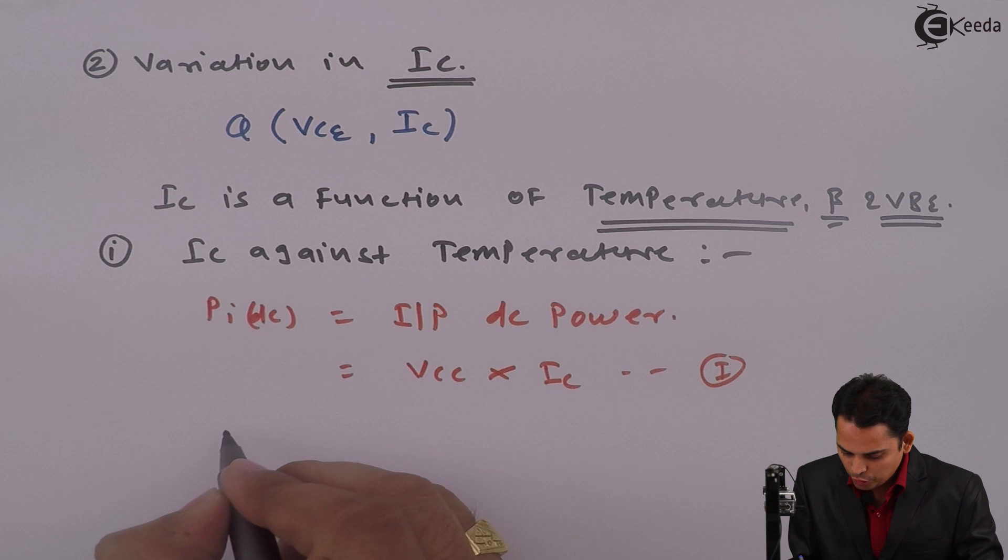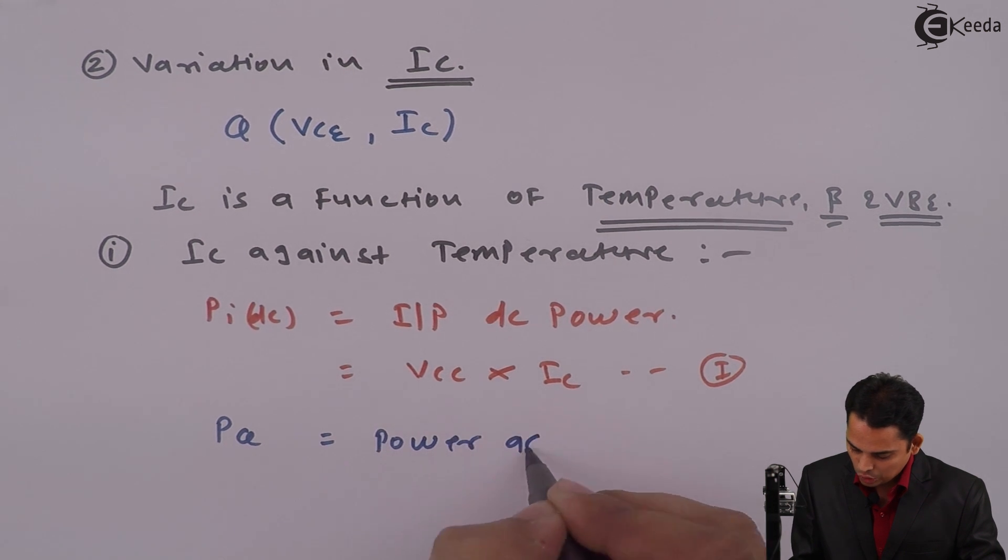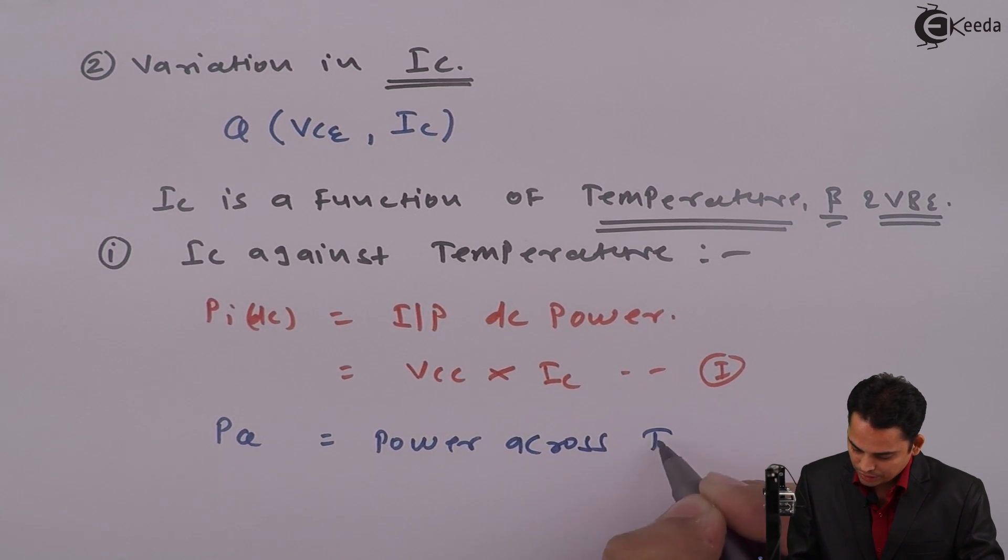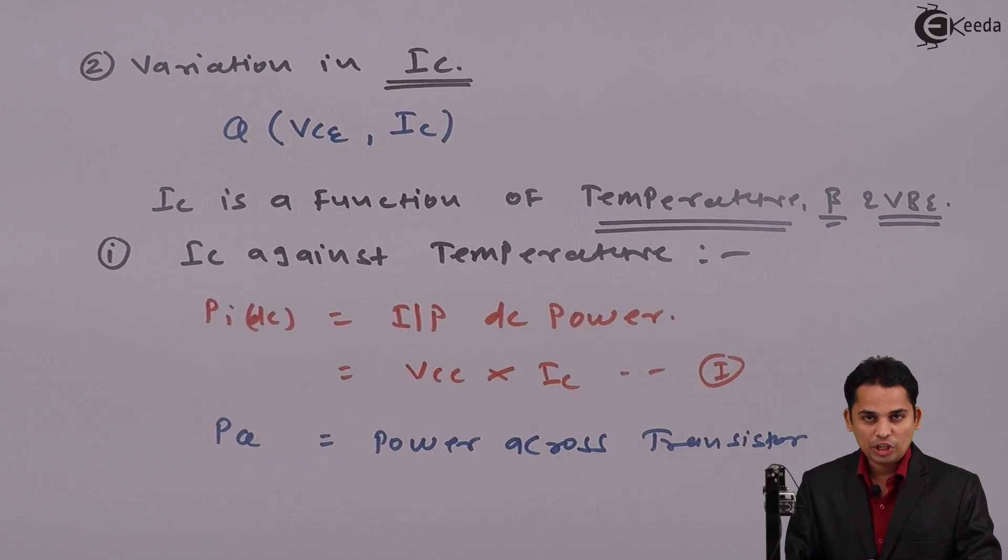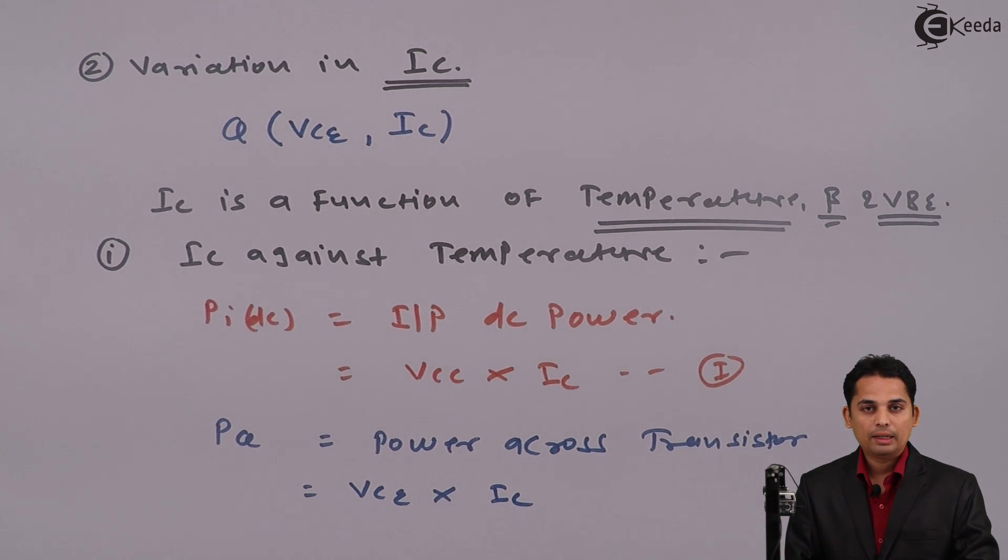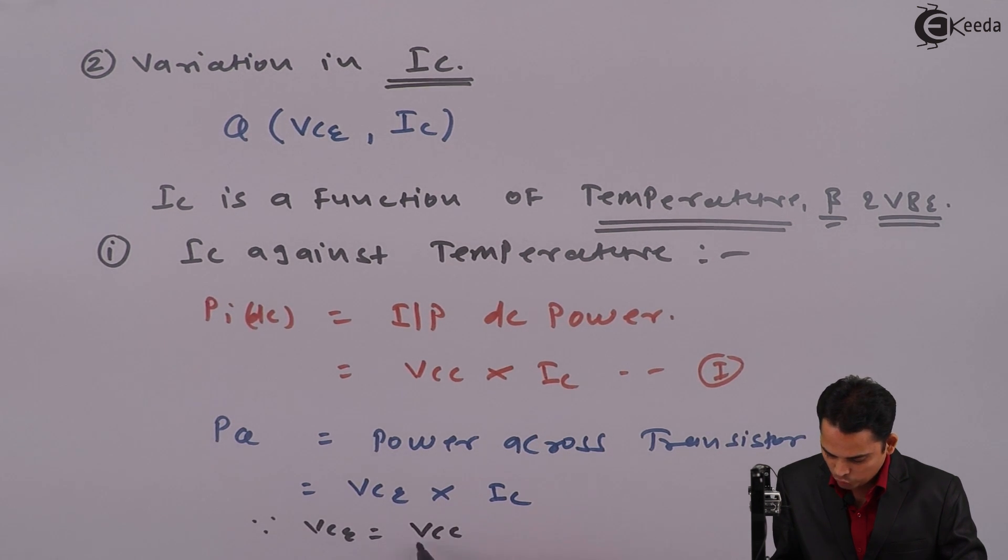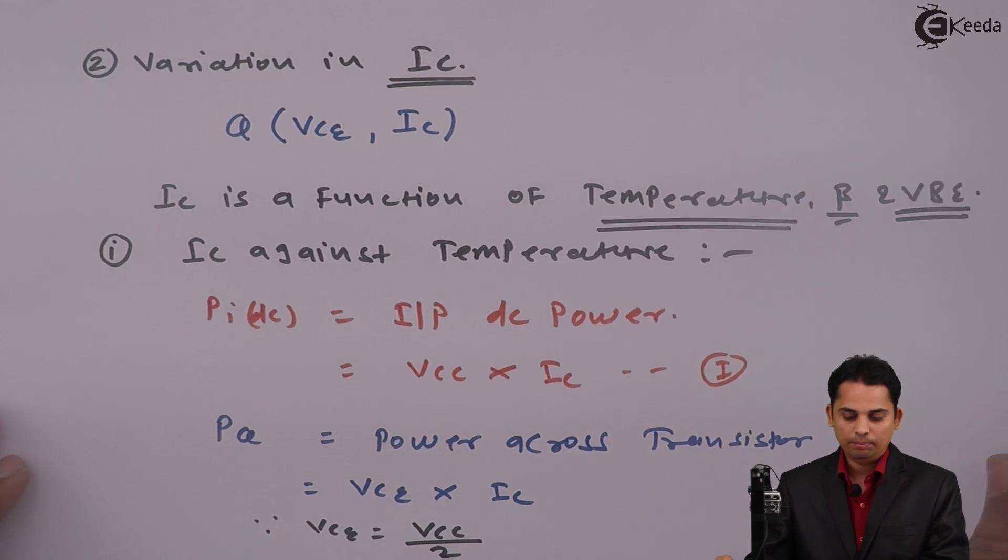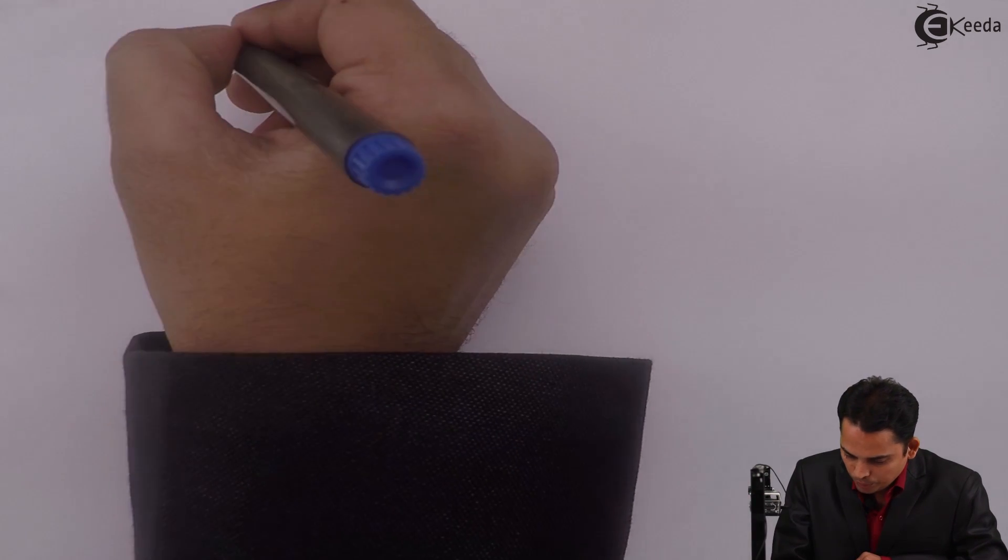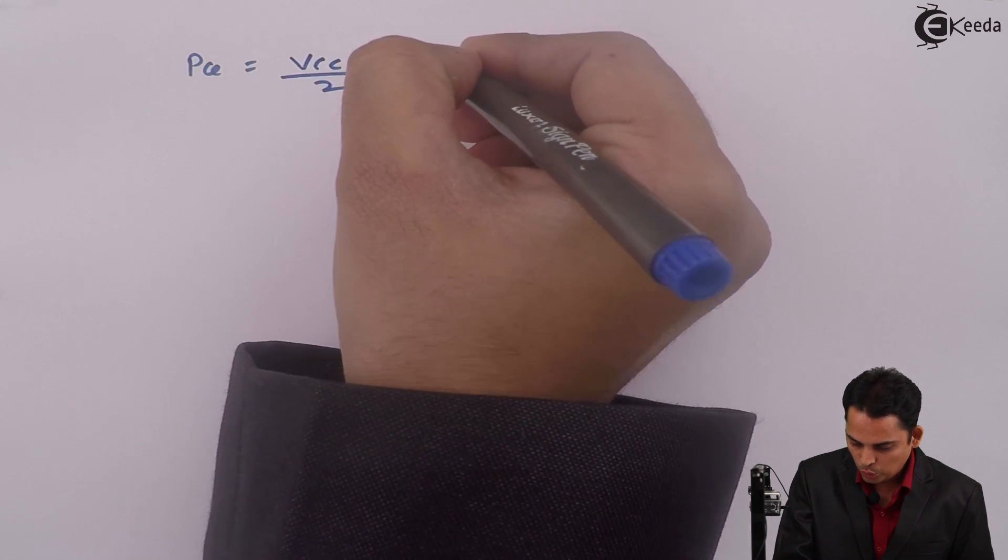Now, let us say PQ is power of transistor, power across transistor, which is given as VCE into IC. But our Q point is at the center of the load line. Hence, VCE is nothing but VCC by 2. So equation will become PQ is nothing but VCC divided by 2 into IC.